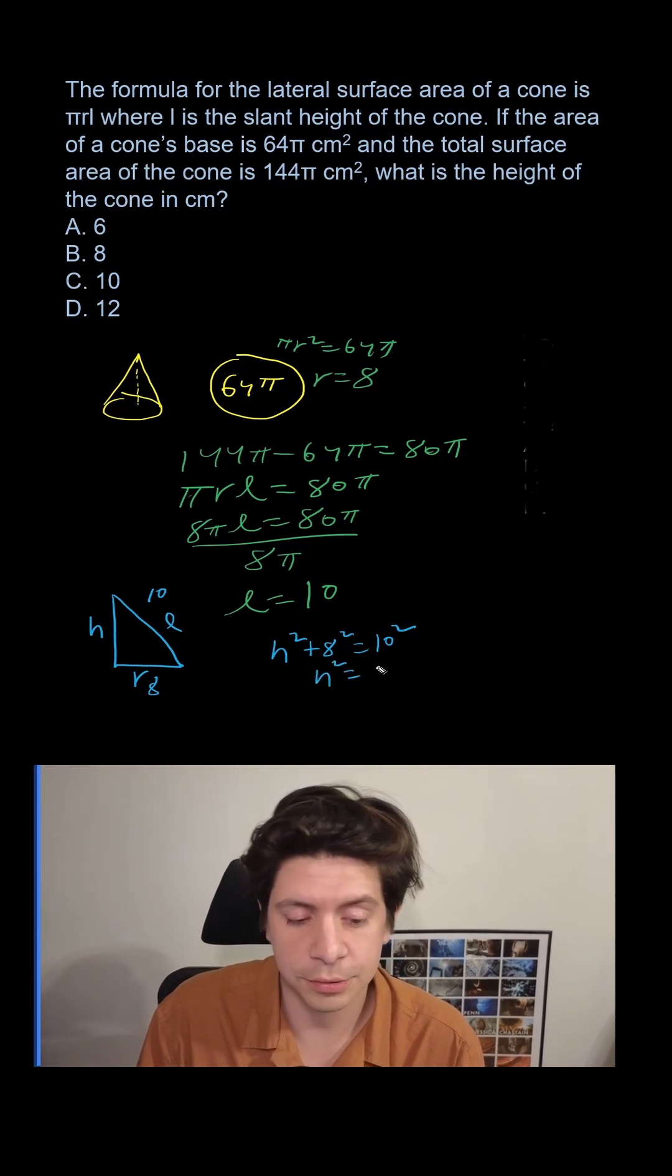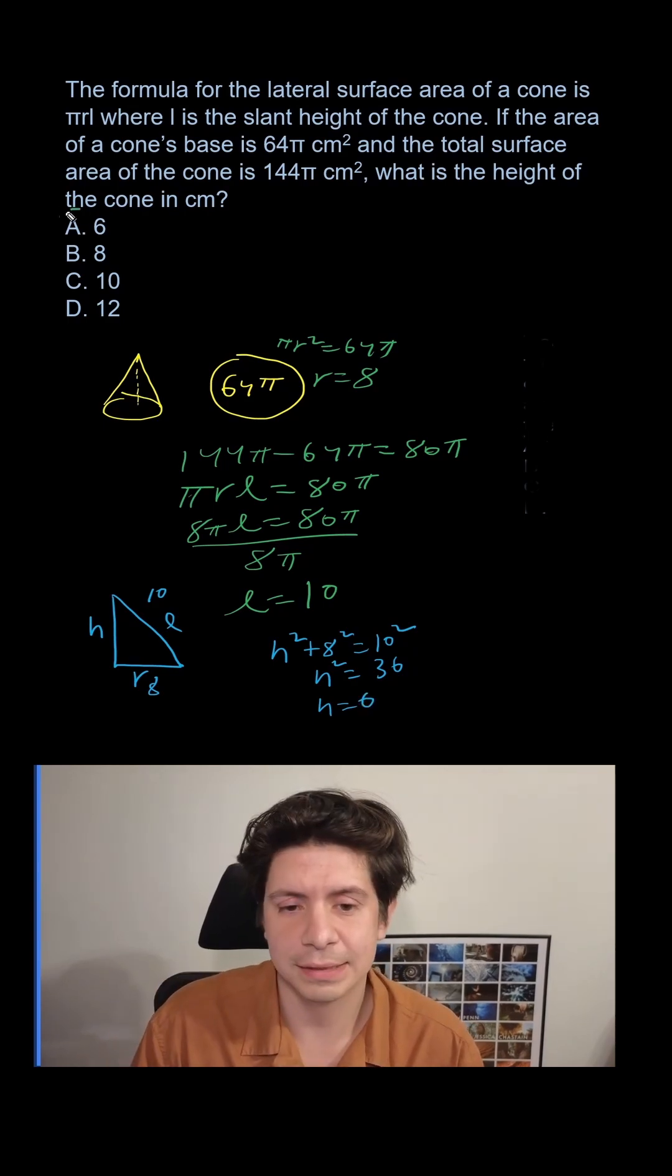H² equals 100 minus 64, 36. H equals 6. So that is A, okay?